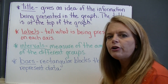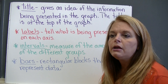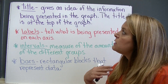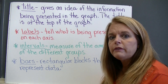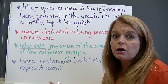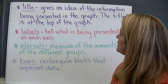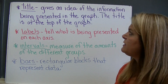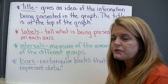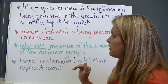A title. Every graph has a title, just like a book. When you go to pick up a book in the library, the first thing you look at is the title. So your bar graph has to have a title so you know what you're reading about, what information has been gathered, what you're talking about. The title gives you an idea of the information being presented in the graph, and the title is always at the top of the graph. You want to find that first and read it so you know what you're looking at.